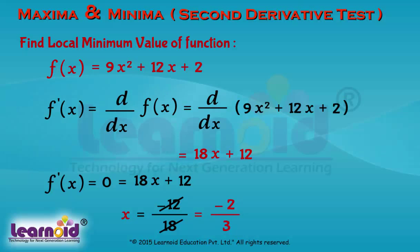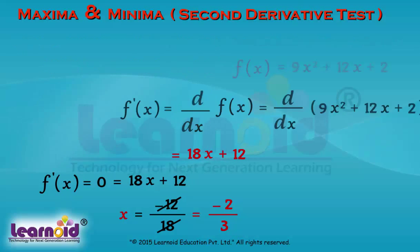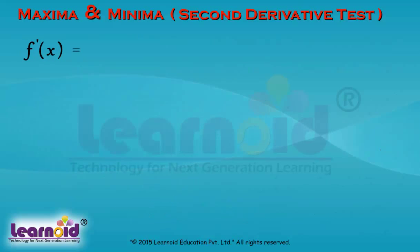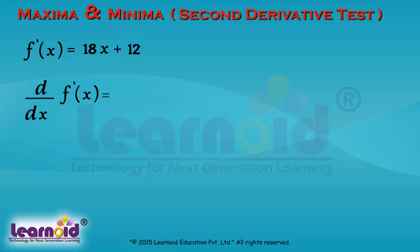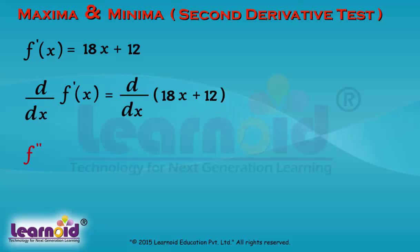Now we will find the second derivative of f(x). Differentiating f'(x) again, we get f''(x) = 18.